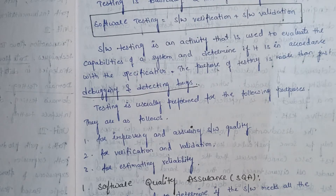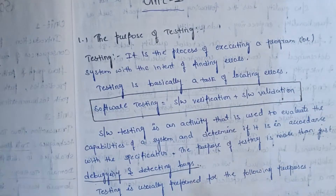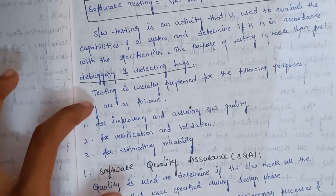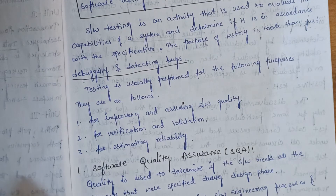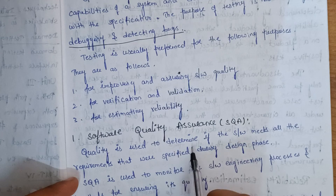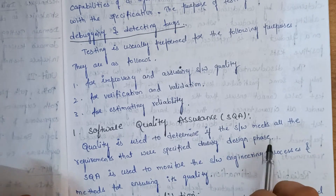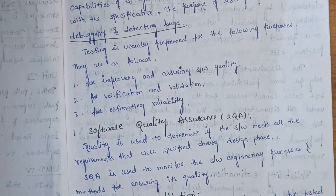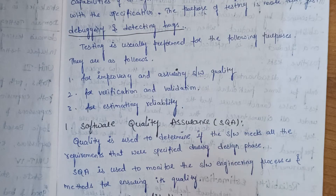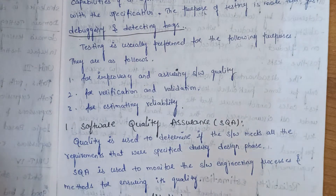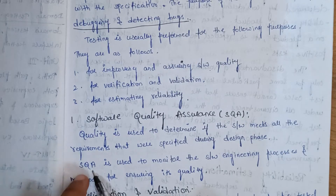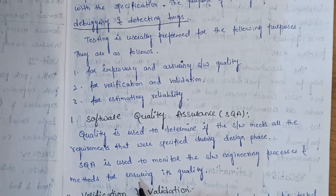For improving and assuring software quality and assurance: it is used to determine if the software meets all the requirements that were specified during the design phase. Software Quality Assurance (SQA) is used to monitor the software engineering process and method for ensuring its quality.